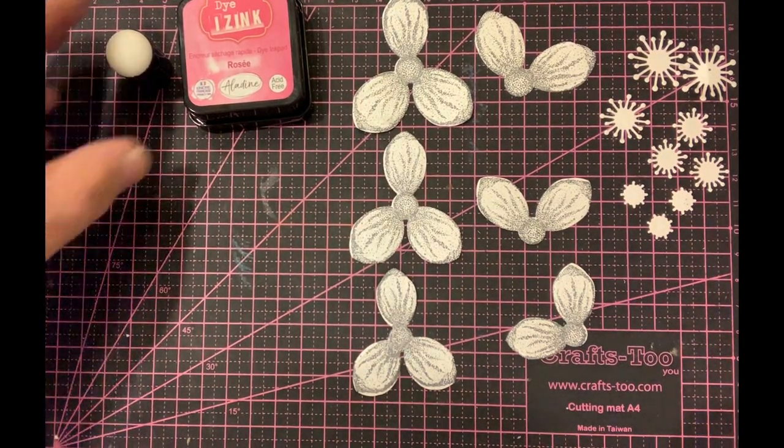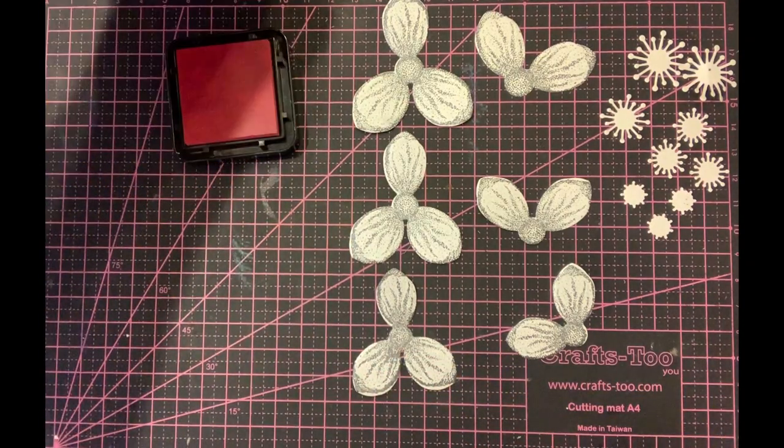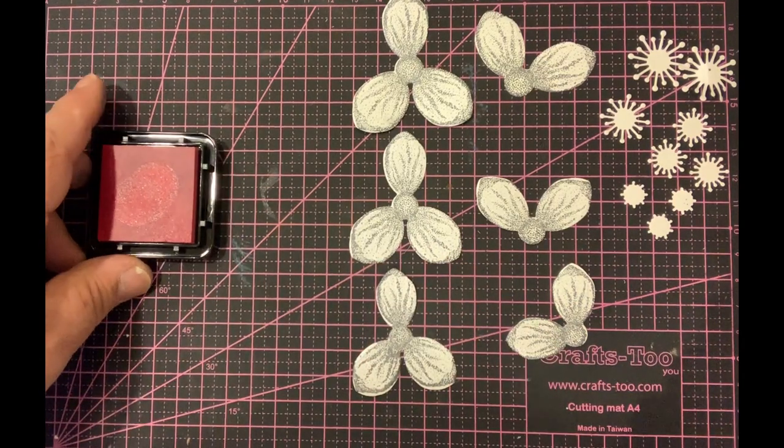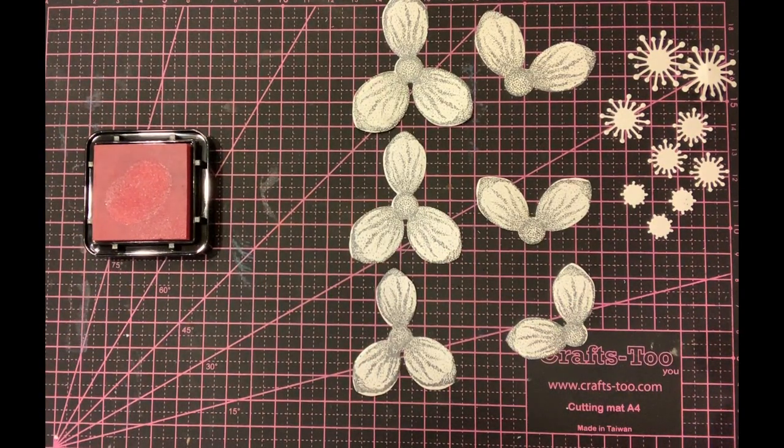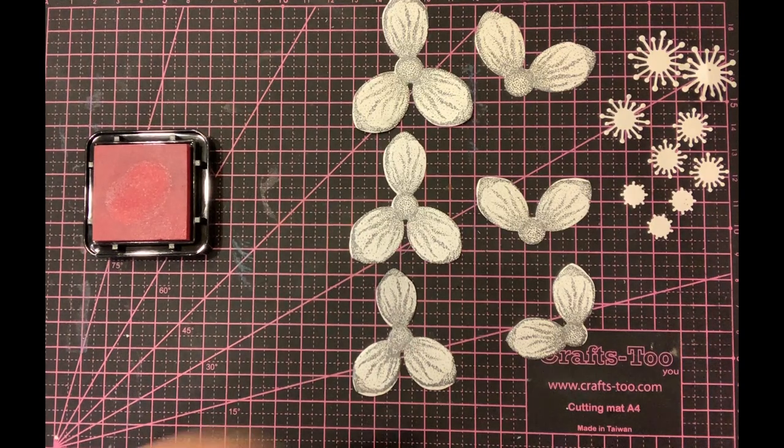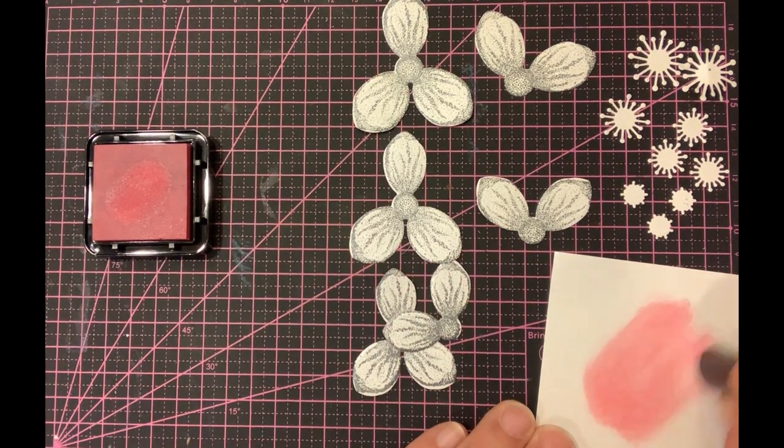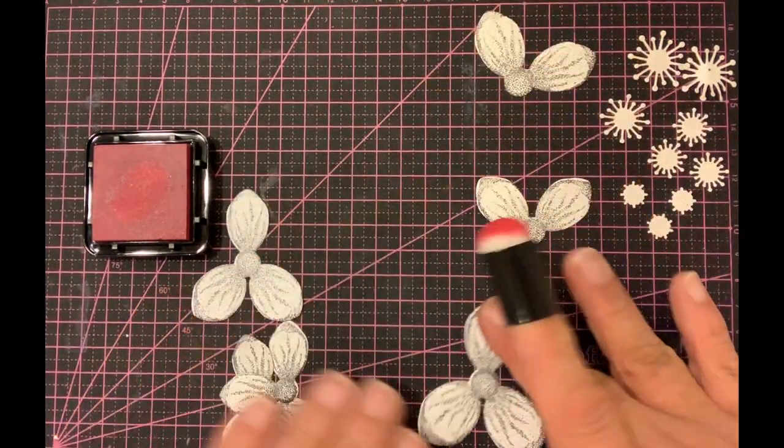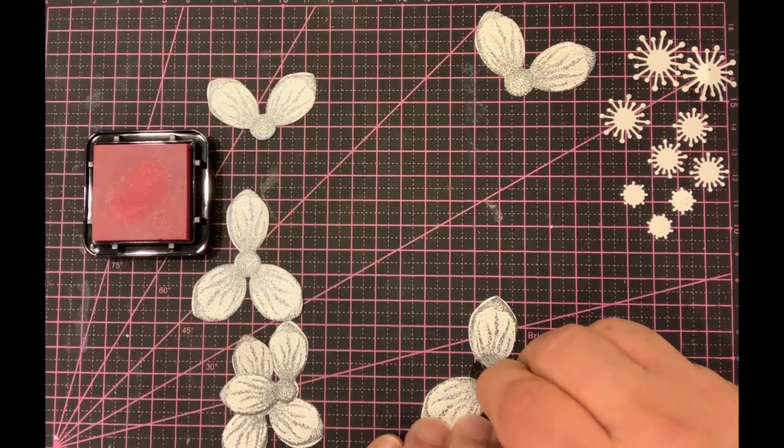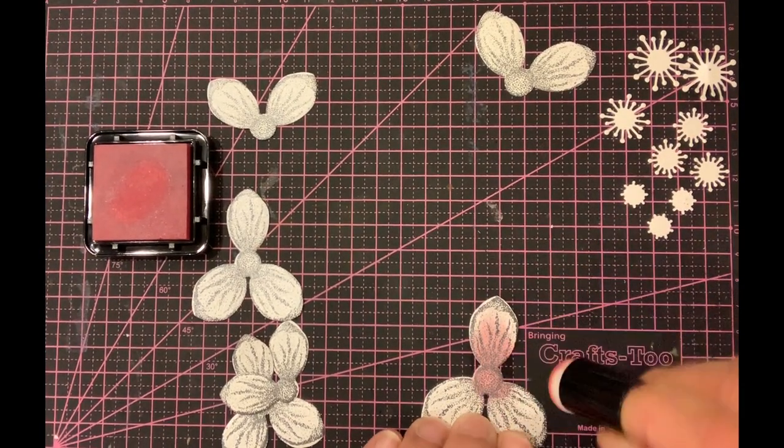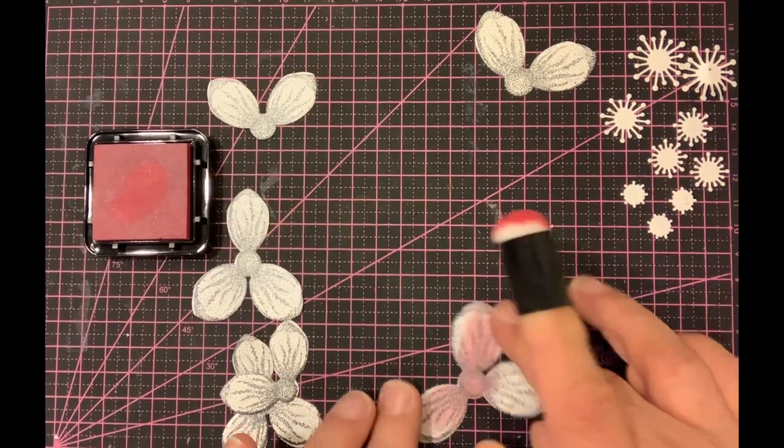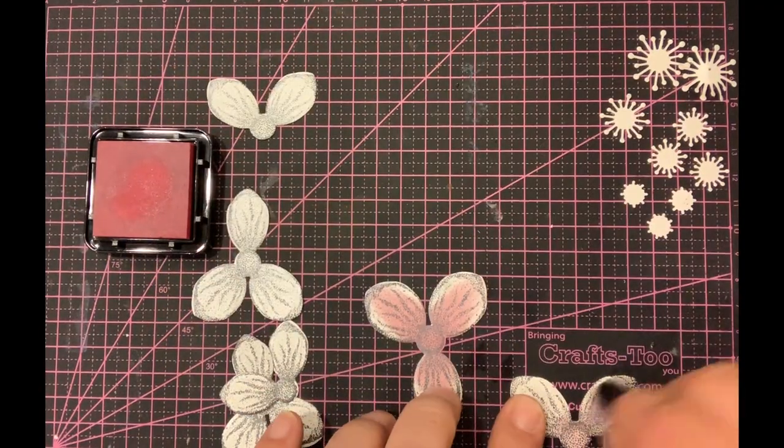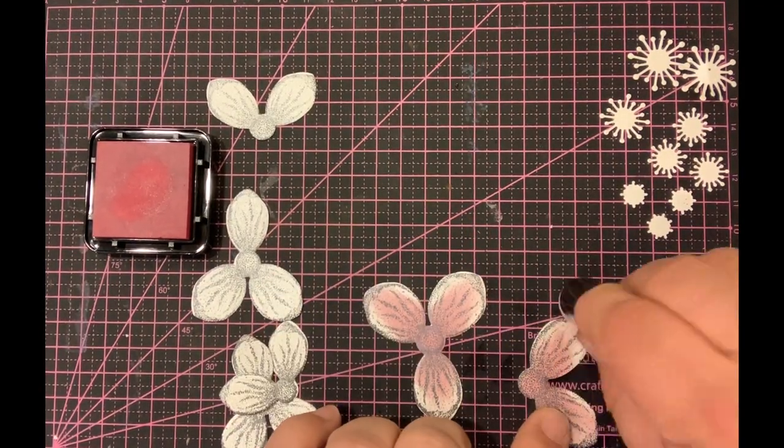I'm going to ink up my dauber using the rose ink. I would always suggest that you take a little bit of color off first to make sure it's nice and smooth and not over-colored. I'll take the largest flower and go from the center, coloring out onto each petal—one, two, three simple strokes. I'll repeat that with the double petal.